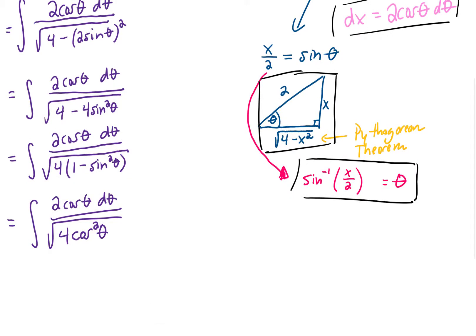And we know that 1 minus sine squared theta is the same thing as cosine squared theta. Now this simplification is looking even better because if we take the square root of 4, we get 2. And if we take the square root of cosine squared, we get cosine.